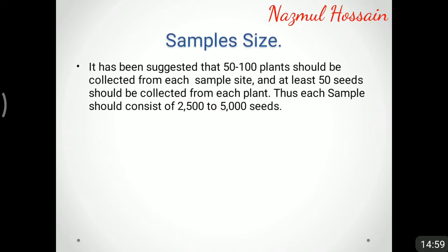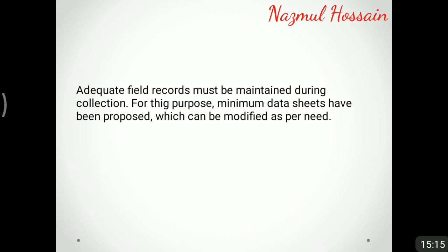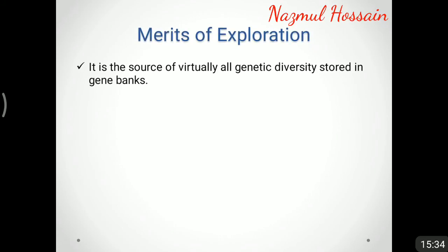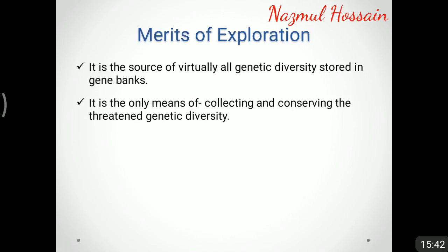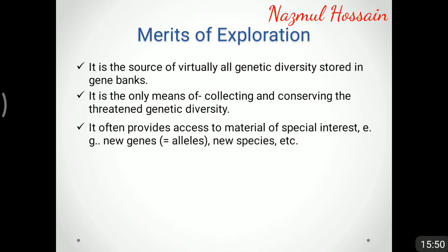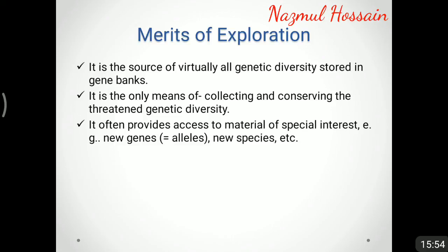It has been suggested that 50 to 100 plants should be collected from each sampling site, and at least 50 seeds should be collected from each plant; thus each sample should consist of 2,500 to 5,000 seeds. Field records must be maintained during collection, and for this purpose minimum data sheets have been proposed which can be modified as per need. The merits of exploration include that it is the source of virtually all genetic diversity stored in gene banks, it is the only means of collecting and conserving the existing genetic diversity, and it often provides access to material of special interest.